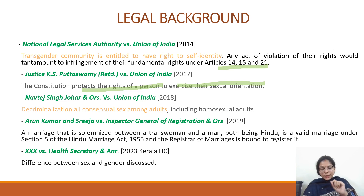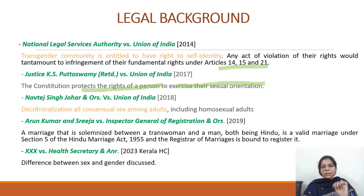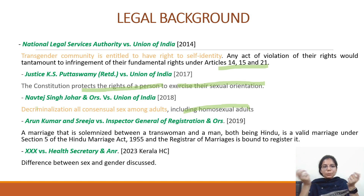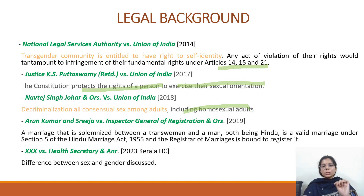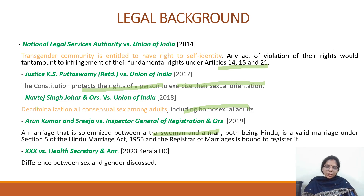Navtej Singh Johar and Others versus Union of India, the 2018 judgment, wherein Section 377 of the Indian Penal Code was held unconstitutional. The effect of that judgment was that it decriminalized all consensual sex among adults, including homosexual adults. Arun Kumar and Srija versus Inspector General of Registration and Others, the 2019 judgment, in which a marriage solemnized between a trans woman and a man — both being Hindu — was held to be a valid marriage under Section 5 of the Hindu Marriage Act, and the Registrar of Marriages was bound to register it.